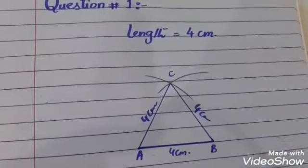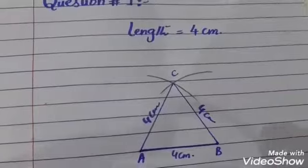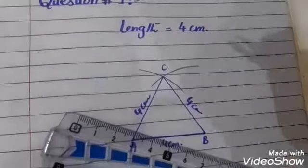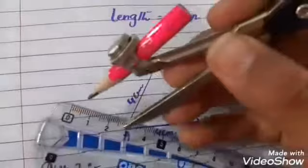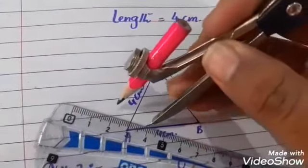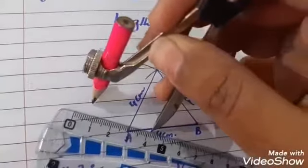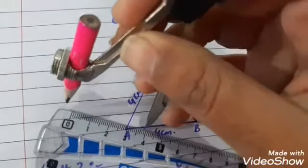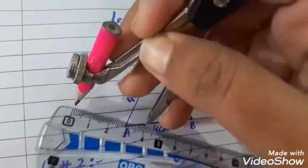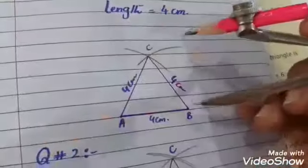Then, open the compass to 4 centimeters from the scale. With this measurement, we draw an arc from point A and another arc from point B.